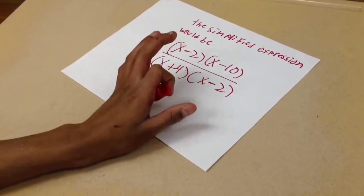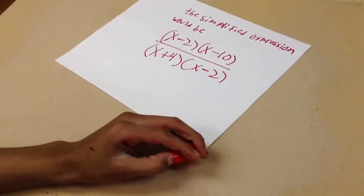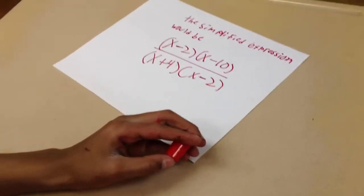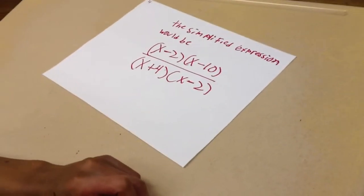And it can't be positive 2 because 2 minus 2 equals 0. So are you saying negative 4 and positive 2 are excluded values because they would make our denominator equal 0? Yes, I am. I agree with that 100%.